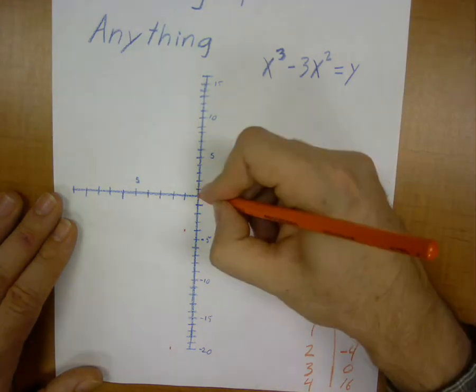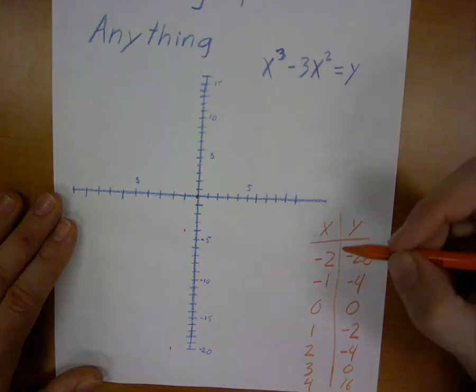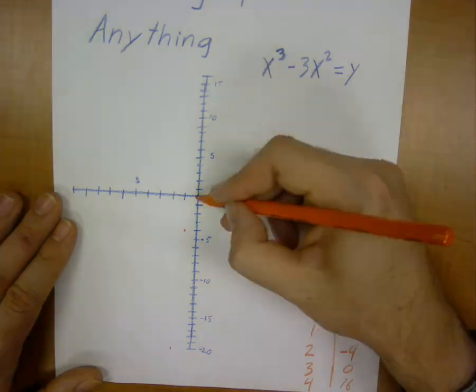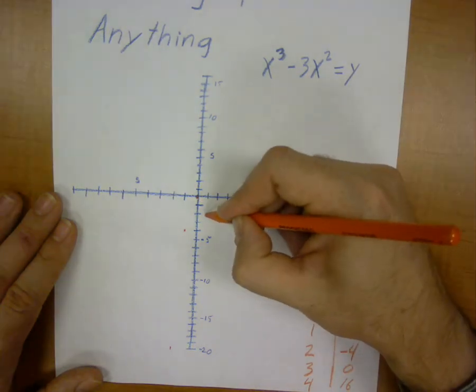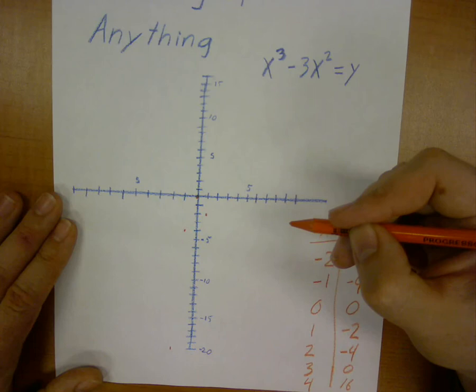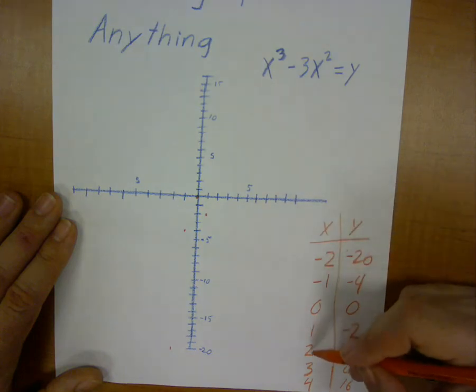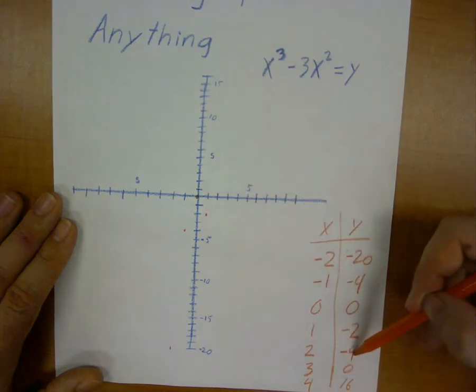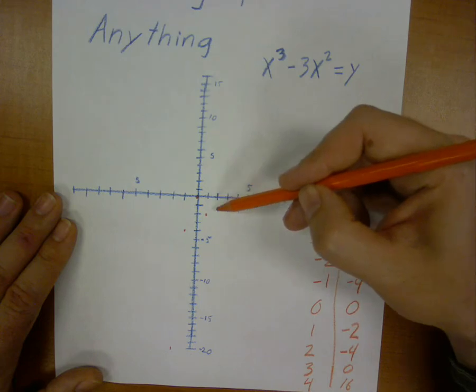0, 0, right there. Negative 1, negative 2. 1 over, 2 down. 2, not 2, negative 4. 2 over, 4 down.